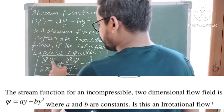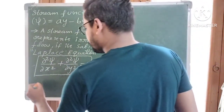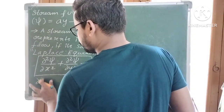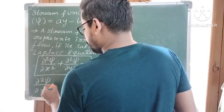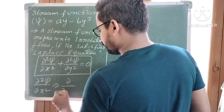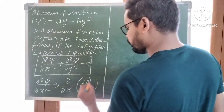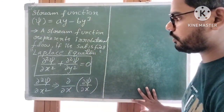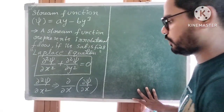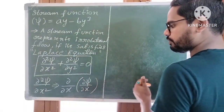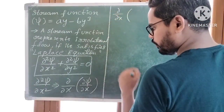First of all, we need to find ∂²Ψ/∂x² and ∂²Ψ/∂y². Let us calculate ∂²Ψ/∂x² first. ∂²Ψ/∂x² can be written as ∂/∂x of (∂Ψ/∂x). Here ∂ means partial differentiation. We have two types of differentiation: ordinary differentiation and partial differentiation. So here we are doing partial differentiation. So ∂/∂x of (∂Ψ/∂x).